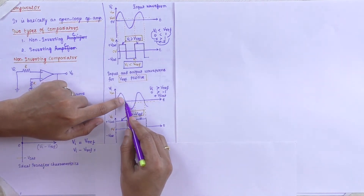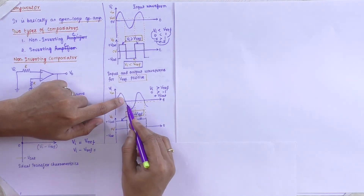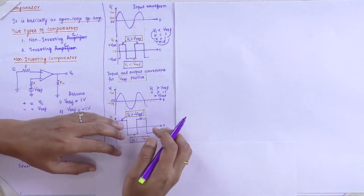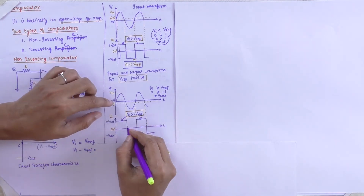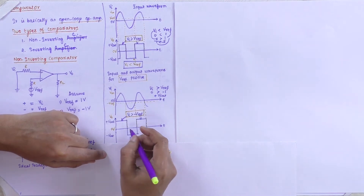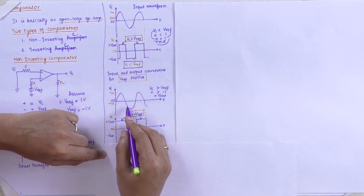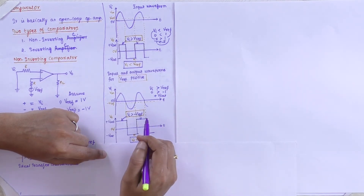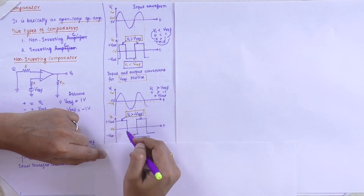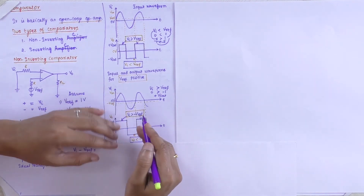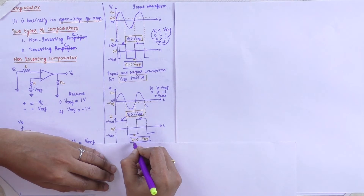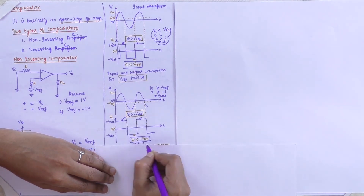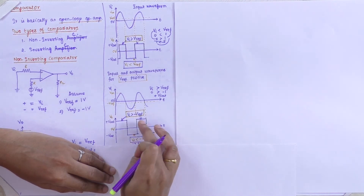When coming to the negative cycle — input VI is minus 1 and reference is minus 1, so it will be at 0 position. Then VI is minus 2 and reference is minus 1, so the negative value comes on the negative side. VI value minus 2 is less than minus 1. You can draw this and see the difference in these two waveforms.